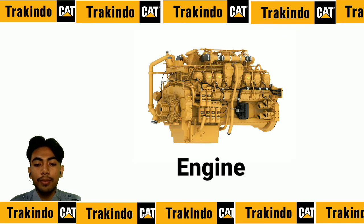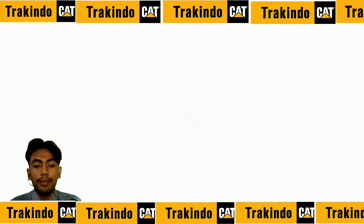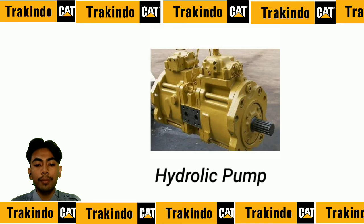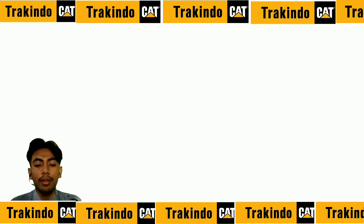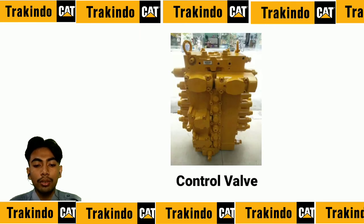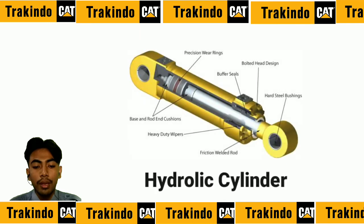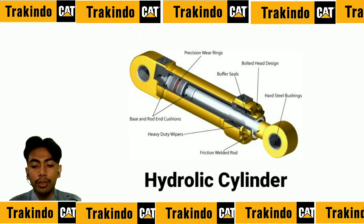First, the engine generates mechanical energy which is then transmitted to the hydraulic pump. Second, the hydraulic pump converts mechanical energy into fluid energy by producing a flow of fluid or oil to the hydraulic system. Third, the control valve is a component that regulates the amount and direction of flow to the hydraulic cylinder. Fourth, the hydraulic cylinder converts the fluid energy into work to drive the steering cylinder, bucket lift cylinder, and bucket tilt cylinder.